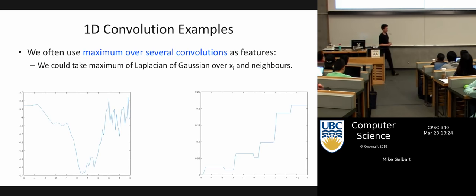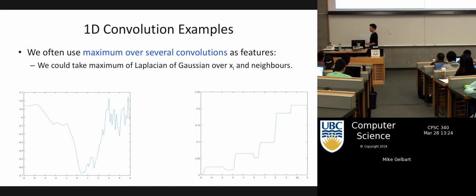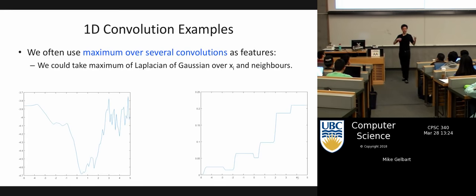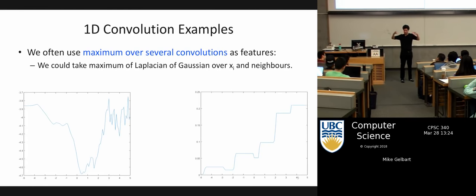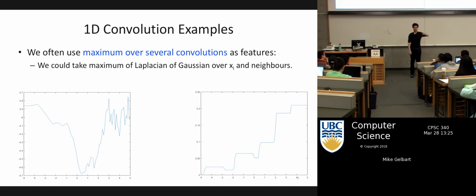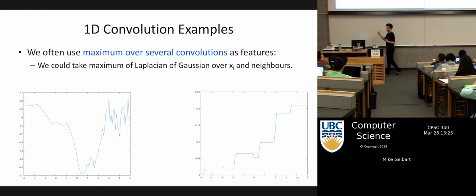Another thing frequently done in convolutional neural networks is taking the maximum over a bunch of nearby values. After taking a convolution that gives us an output, we replace each value with the maximum of itself and some neighbors in the output space. For example, if there's a spike anywhere around here, the spike was either right here — giving a large value — or nearby, and by taking the maximum of a little neighborhood, we get a large value if there's a spike somewhere around this place, which helps us classify.